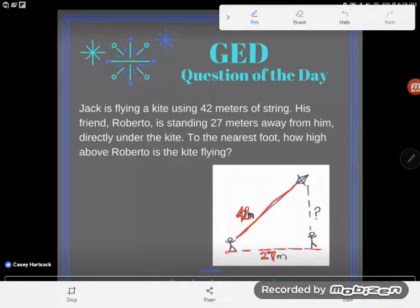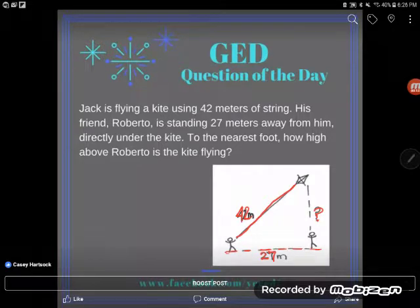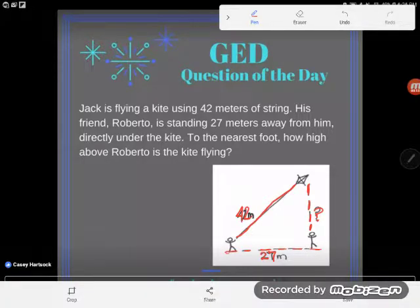Directly under the kite. And then they say to the nearest foot how high above Roberto is the kite flying. So they're asking us to find this measurement here, how high up above Roberto's head the kite is.